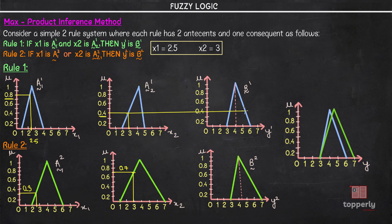In the max-min inference method, we had truncated the fuzzy set, obtaining a trapezoidal figure. But in the max-product inference method, instead of truncating, we scale down the triangular fuzzy set. We scale it proportionally, and this scaled region becomes our output y1.